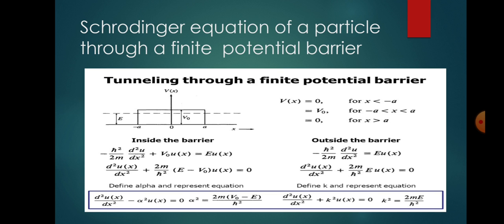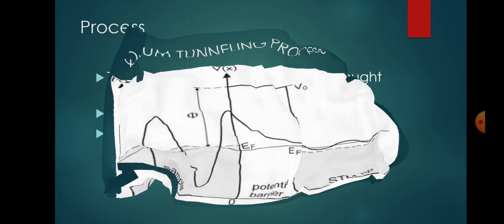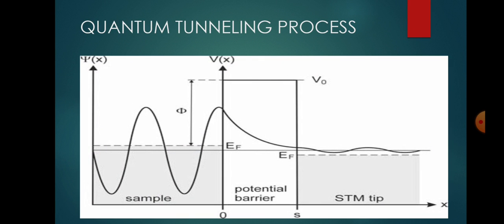The solution for E ≤ qV₀ inside the barrier is ψ(x) = Fe^(βx) + Ge^(−βx), where β = √(2m(qV₀ − E)/ℏ²) is a constant. The schematic representation of the wave function across the barrier has been shown. The continuity of ψ (or u) and dψ/dx (or du/dx) at x = 0 and x = d, as required by boundary conditions, provides four relations between the five coefficients A, B, C, F, and G.